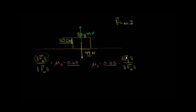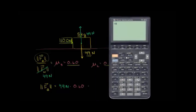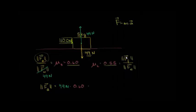So the magnitude of the budging force over the magnitude of the normal force — which is 49 Newtons — equals 0.60. Or we can say the magnitude of the budging force equals 49 Newtons times the coefficient of static friction, which is 49 times 0.60. Coefficients of friction are unitless, so the units remain in Newtons. This gives us 29.4 Newtons.